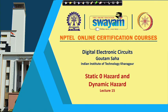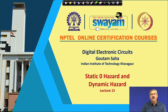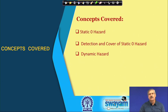Hello everybody. In the last class, we discussed Static-1 Hazard. We saw that an otherwise optimized circuit can create issues in terms of producing glitches, which could be troublesome in some applications. We found how to detect such hazard for certain circuits and how to cover it. In today's class, we shall look at Static-0 Hazard and Dynamic Hazard — these are the two things we shall take up today.